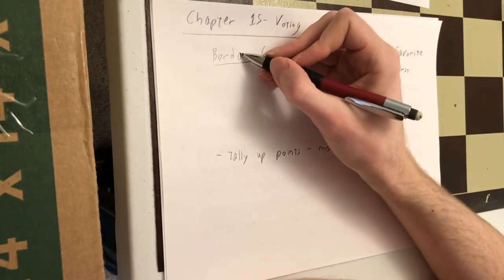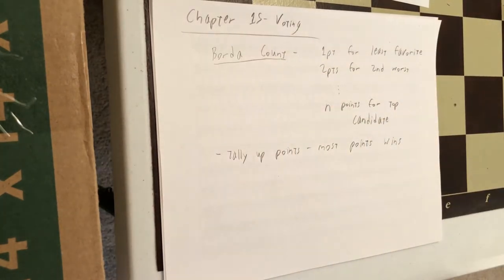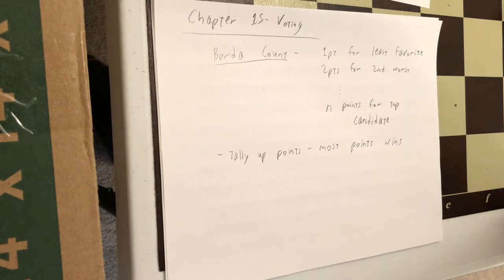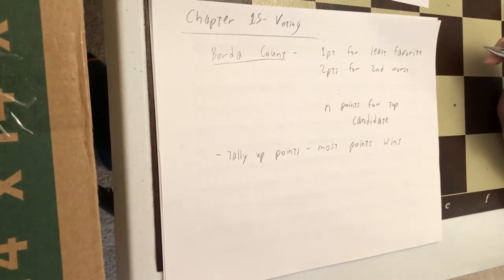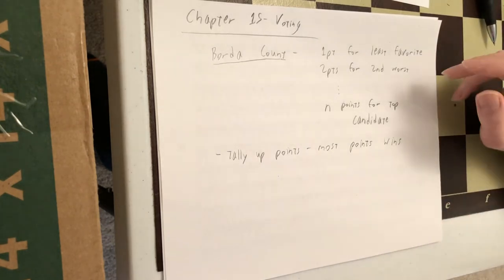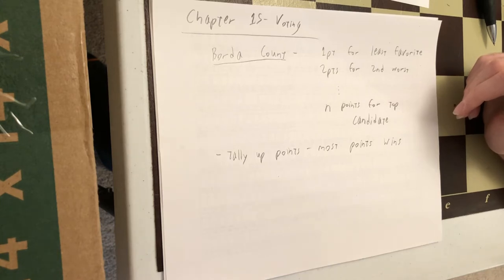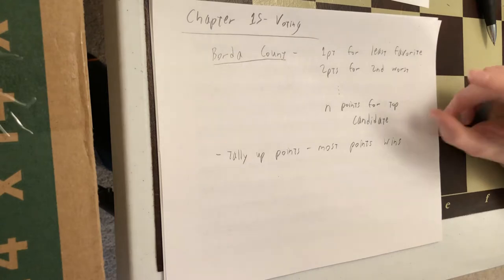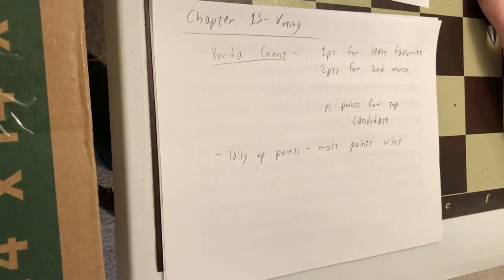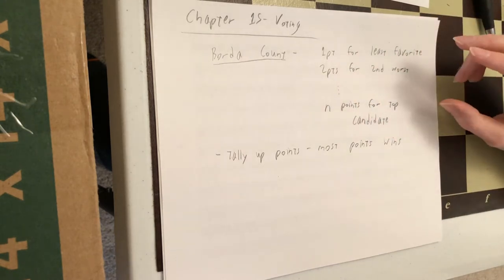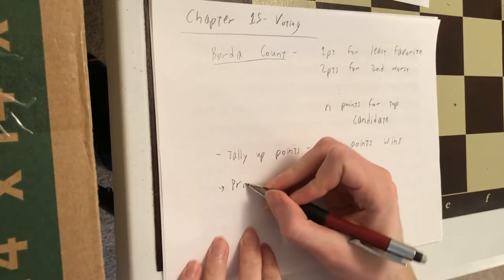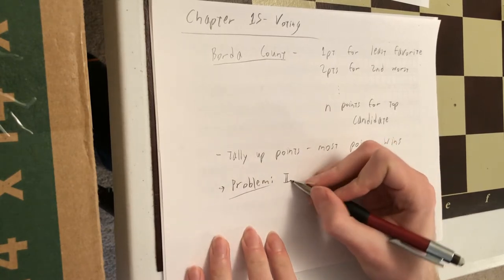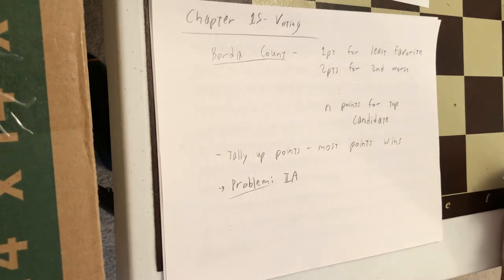So this system is also imperfect. The problem here is that we're once again going to violate that condition of independence of irrelevant alternatives. So again, that's where if you prefer A over B, if it's just A and B, you should still prefer A over B if it's a choice between A, B, and C. Adding C should not flip your preferences. So how can this arise from the Borda count? Well, if you take out one of these candidates here, that's going to change everybody's scores. And that can even reverse the outcome of an election.